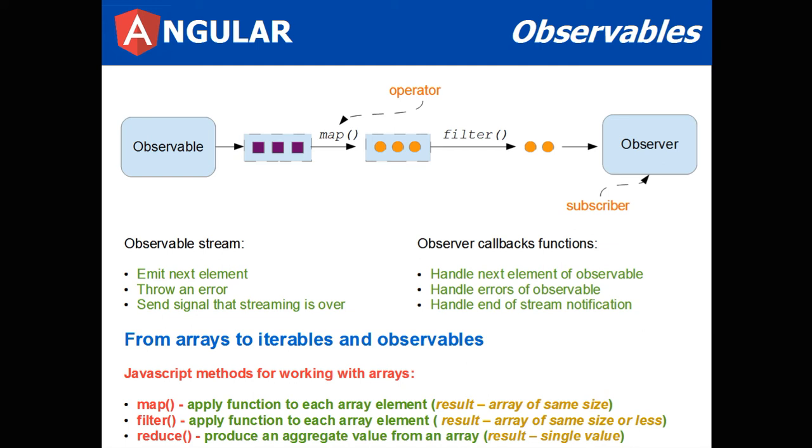An observer callbacks functions handle the next element of the observable, handle errors of the observable, and handle end of stream notification.